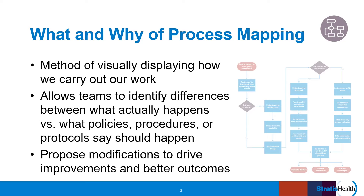To develop an accurate map of how the process is working, a non-blaming culture is needed so people feel comfortable describing what is actually happening. And if what is actually happening is different than what is written in policy or protocol, why is it happening that way? It could be that the team has found a better or more efficient way to complete the steps, or there could be barriers to the process as outlined in current policies that need to be addressed. If the team fears describing what is actually happening, the exercise of process mapping may not yield helpful information.